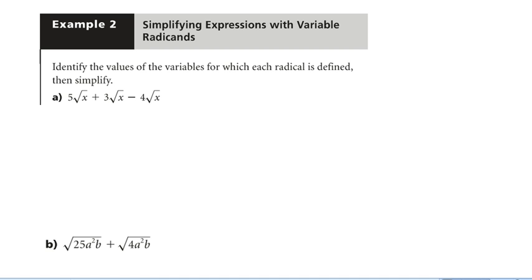Example 2 from the textbook — we're going to combine some stuff from yesterday with today. The first thing it wants us to do is tell when the roots are defined, what values of x make the roots defined. In this case they're square roots, so x is going to have to be greater than or equal to 0. Once we do that, easy — they're all like terms. So 8 minus 4 is 4 root x.